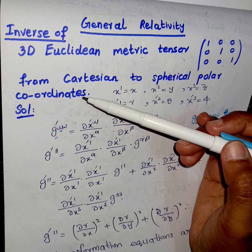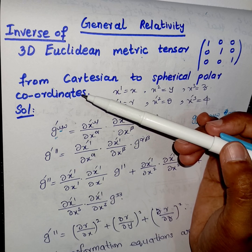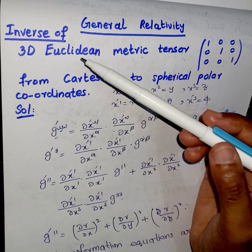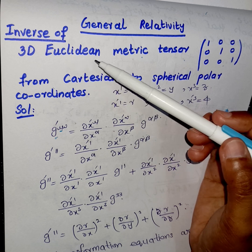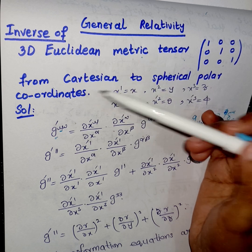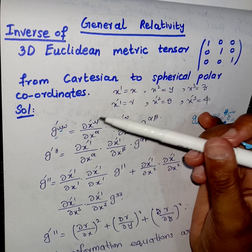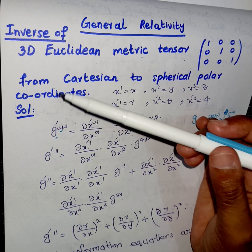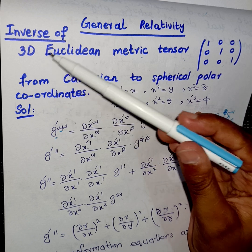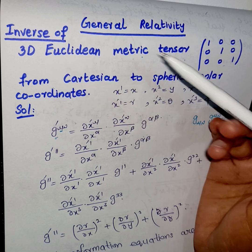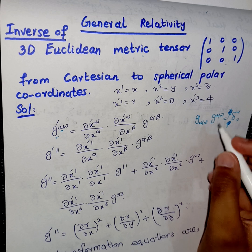Hello everyone. As you know, in the previous lecture I discussed how we can transform the three-dimensional Euclidean metric tensor from Cartesian to spherical polar coordinates. In this lecture, we will see how we can find its inverse.